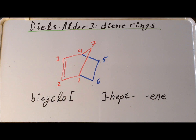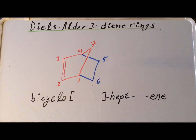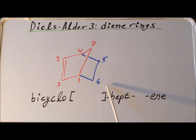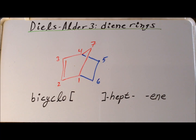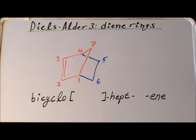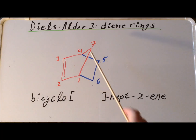We can also name this product systematically in the IUPAC system by first beginning with bicyclo, because it is a bicyclic compound. We notice that there are 7 carbons, so we have a hept root. It is an alkene since it has one double bond, so we have the -ene suffix, and specifically the double bond is between the second and third carbons, making it hept-2-ene. Inside the brackets, we put numbers that tell us something about the structure of the bicyclic system.